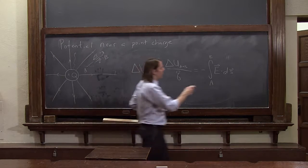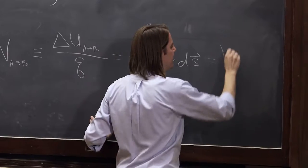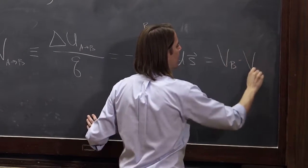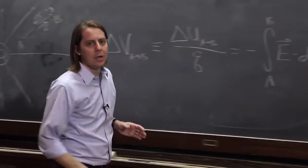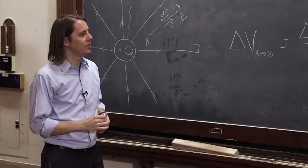Also, one more thing we could tack on there is that it's VB minus VA. Here, we have defined potential as a difference.